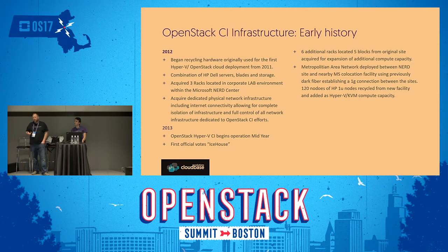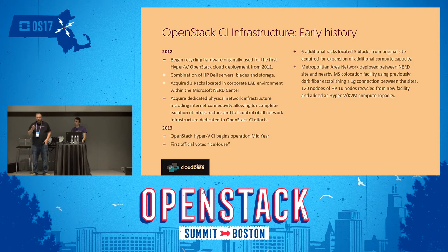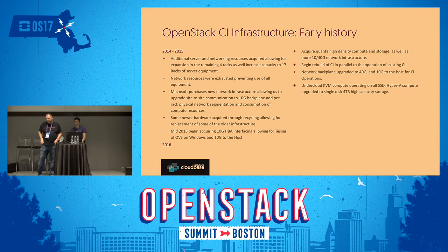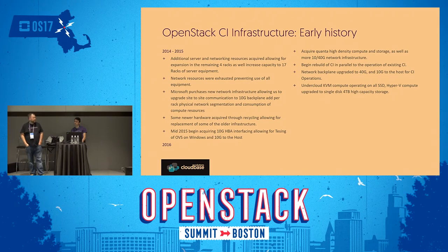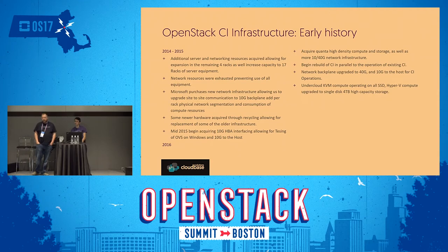We gained more equipment from local Microsoft engineering teams, adding 120 new nodes that we lit up shortly before the Havana summit at the end of 2013. As we kept adding capacity we kept running out of networking, so we got budget to build an entirely new network infrastructure for the CI lab — all Cisco Nexus gear — which gave us full 10-gigabit connectivity across the city.